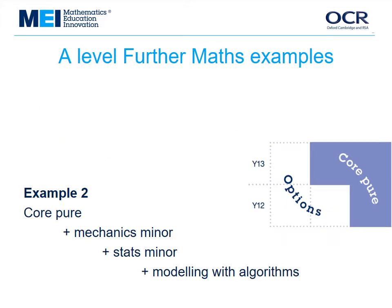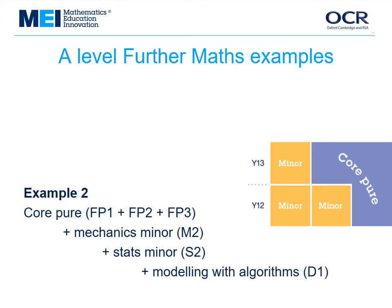But you might not want to study that much mechanics, and there's a statistics major paper as well which you might not want in full either. So you can take three different optional papers instead of two, as in this second example. Here are the equivalent modules from the current spec — remember, these equivalences are only about size, not the actual content. The three options can be taught in any order, and any two of them will go with an AS core-pure paper to make an AS in Further Maths.